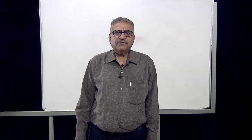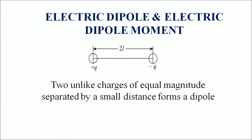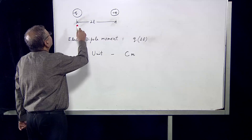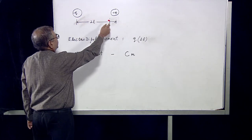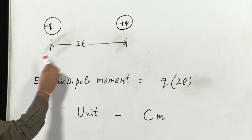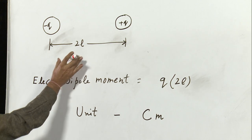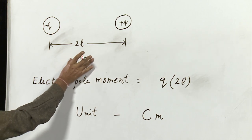Let us first define electric dipole. The electric dipole is a system of two equal and opposite charges separated by a very very small distance. The figure shows two charges minus Q and plus Q separated by a very small distance 2L.